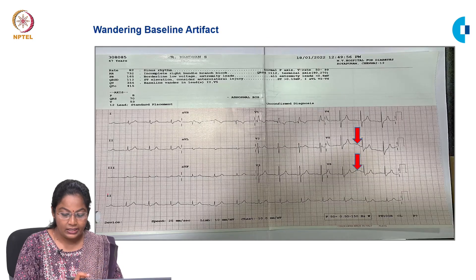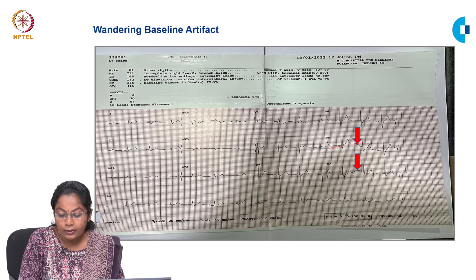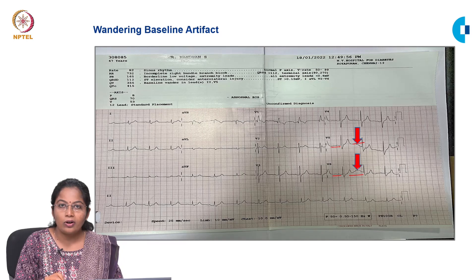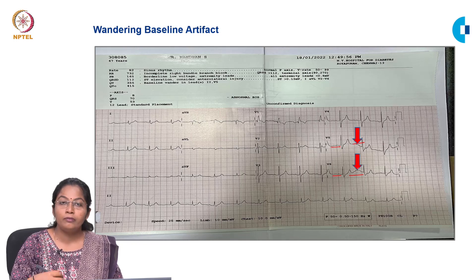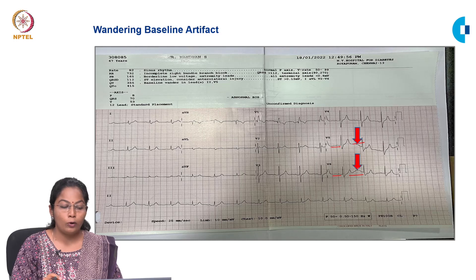In this ECG, the isoelectric line is displaced — instead of remaining at baseline, it wanders above or below. This is called the wandering baseline effect, which could be because of movement of the patient or abnormal respiratory movements. This is also an artifact which can be avoided.